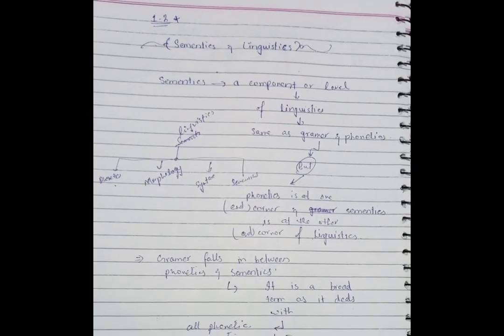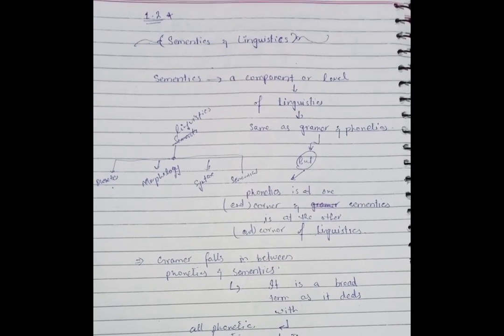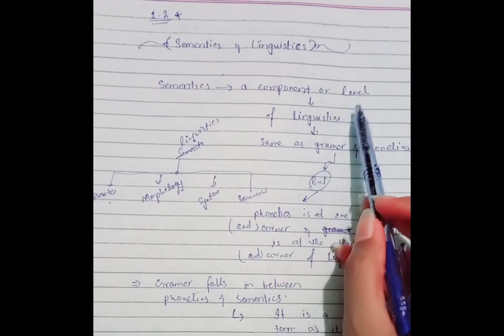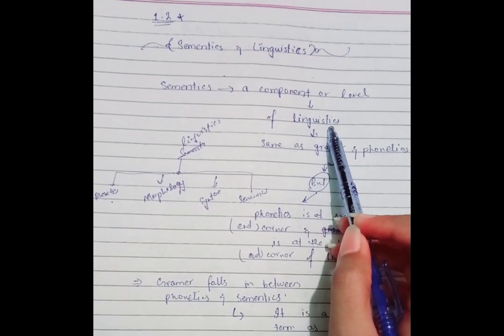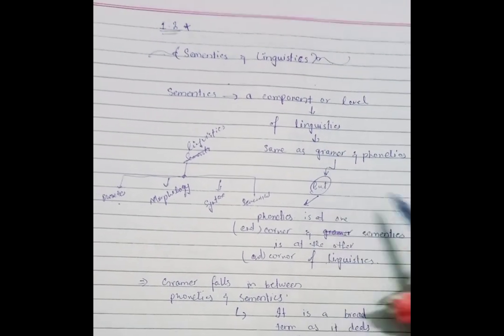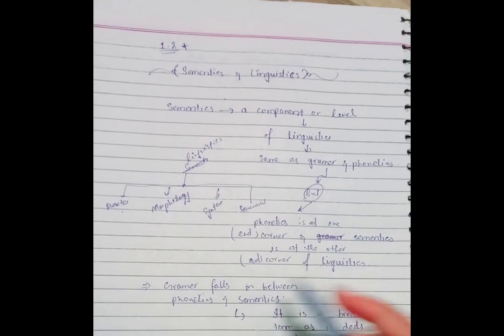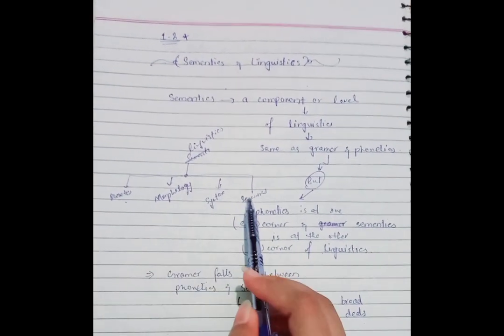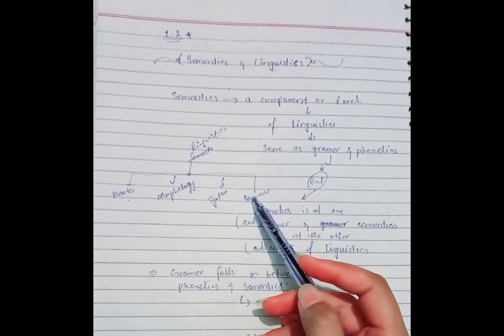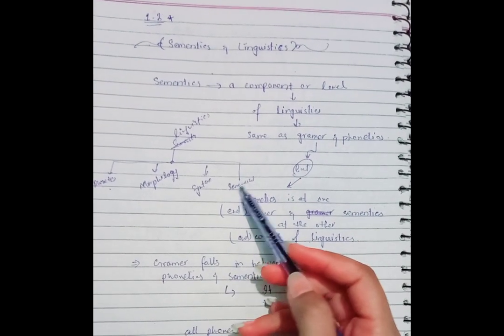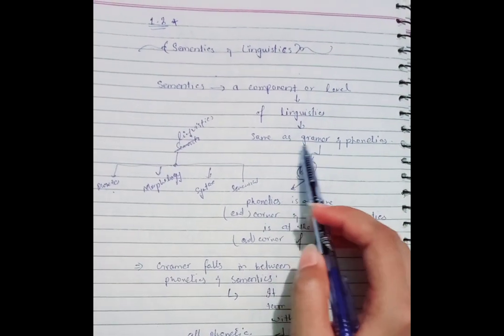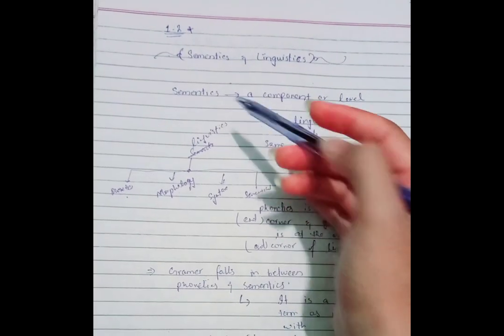What we are going to study in semantics and linguistics is that semantics is a component or a level of linguistics. If we make a chart of linguistics, we have four different components of linguistics. And just like grammar and phonetics, we have a branch called semantics.